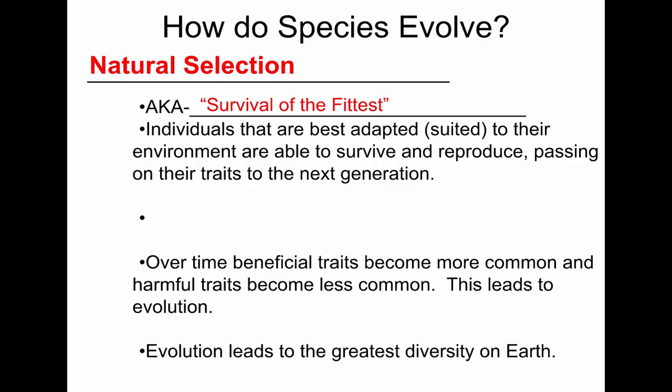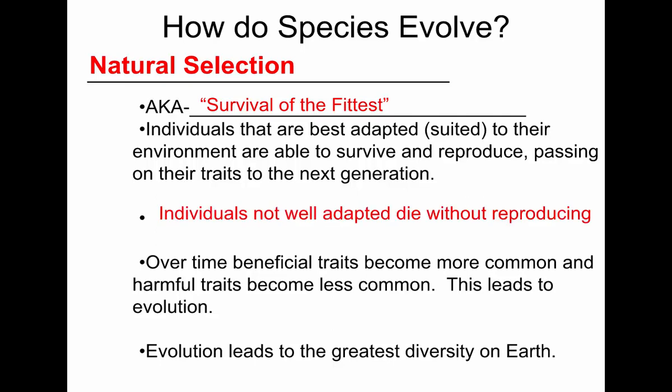Any individual that happens to be born well-adapted, well-suited to its environment, will be more likely to survive, therefore more likely to reproduce, and more likely to pass on these beneficial traits to their offspring. If this continues generation after generation, it can result over time in a change in a species.